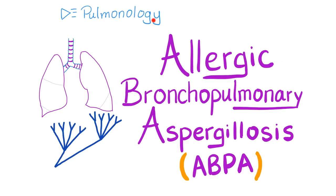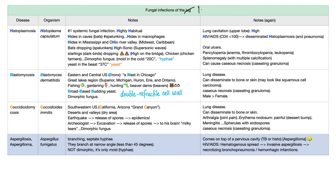In my pulmonology playlist, I've discussed allergic bronchopulmonary aspergillosis in a previous video — it was epic, by the way, you should watch it. Fungal infections of the lung include histoplasmosis, blastomycosis, coccidioidomycosis, and aspergillus. These four can also be systemic.